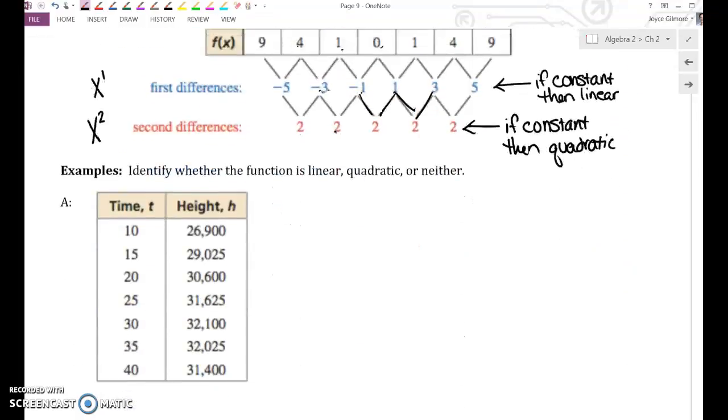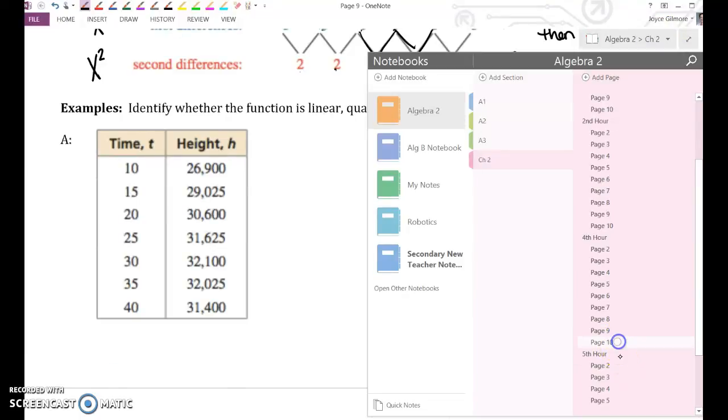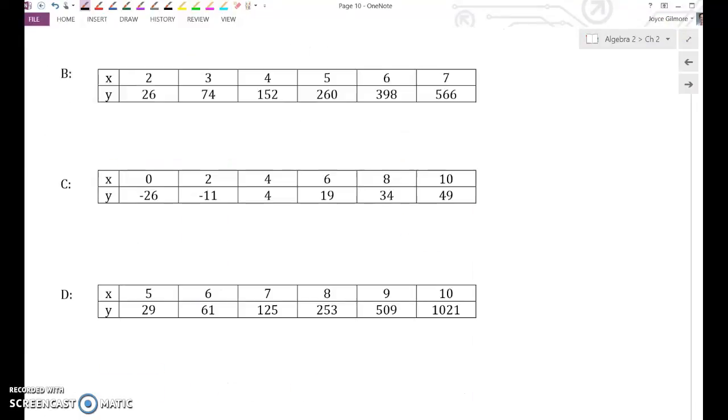This first example has really huge numbers, so we're just going to skip it and go to the last page of your notes, where the numbers are a little bit more manageable. So turn to the last page of your notes. In example B, first you need to check to make sure your x values are increasing or decreasing at a constant rate. Make sure that there's nothing crazy going on with your x's. So in example B, our x's are increasing by 1, they're increasing at a constant rate, so our x's are fine.